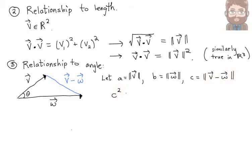Now, if this was a right triangle, we would have the Pythagorean theorem to work with. C squared is A squared plus B squared. But that angle theta might not be a right angle. In this more general case, there's a more general theorem you can apply.